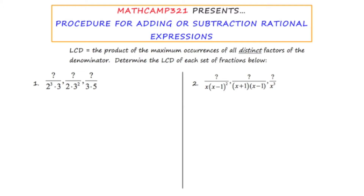We're asked to determine the LCD of each set of fractions. In example one, they give us three fractions. The first factor I notice is the factor two. I'm going to write down the number two, and now I consider the exponents of each occurrence of two. I have the exponent three and the exponent one. I want the maximum occurrence, so I write down three because that is the largest power.